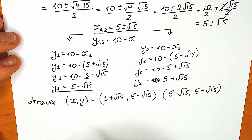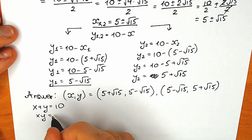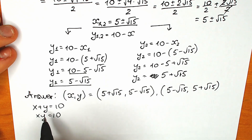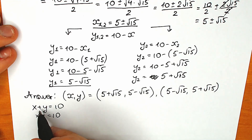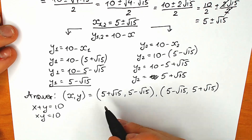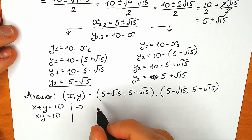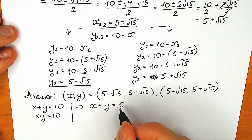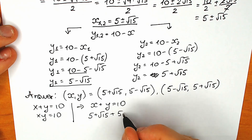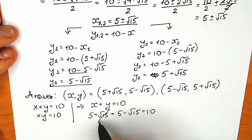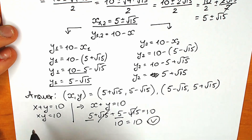Let's check it. We have x plus y equal to 10 and xy equal to 10. For addition, we don't need to check both pairs because they're symmetrical. So (5 plus square root of 15) plus (5 minus square root of 15) — we cancel the square root of 15 terms, and get 5 plus 5 equals 10. Our addition checks out perfectly.